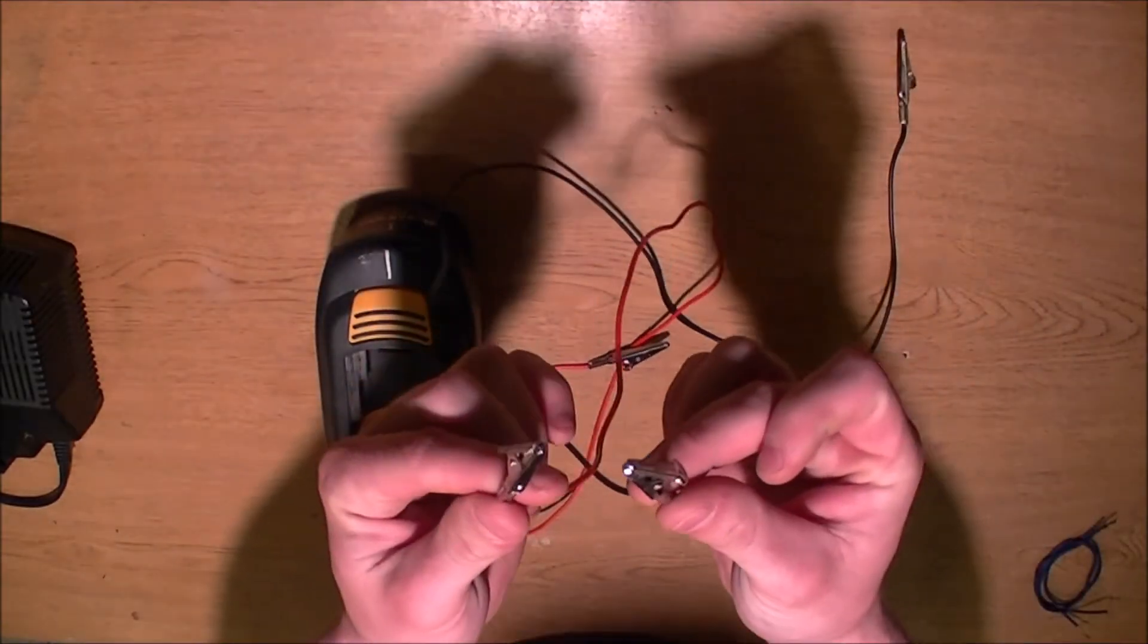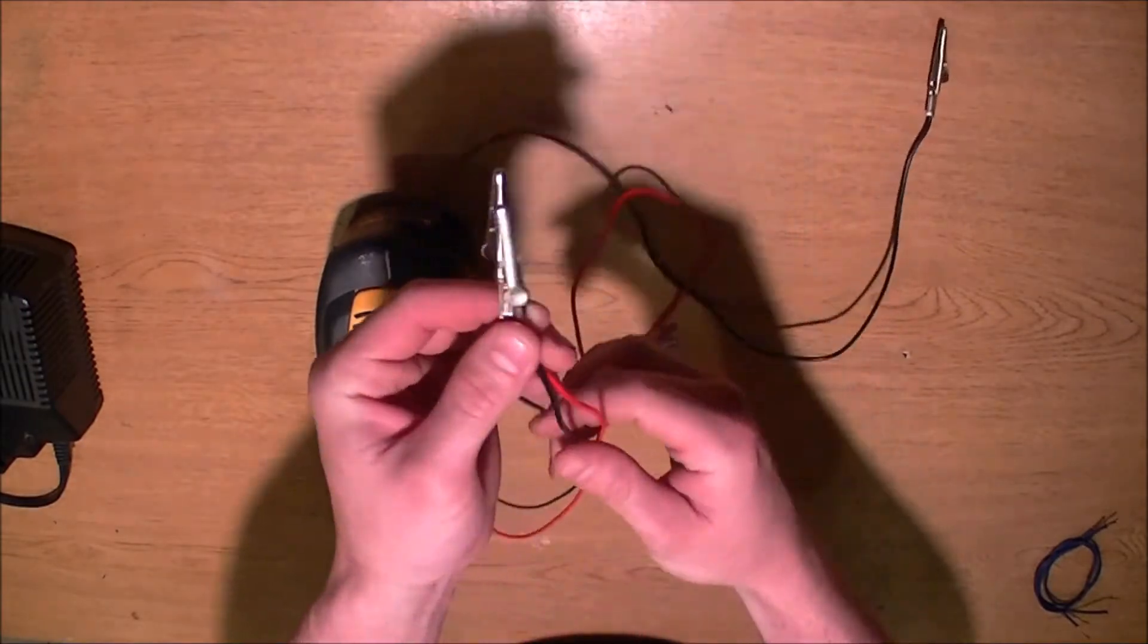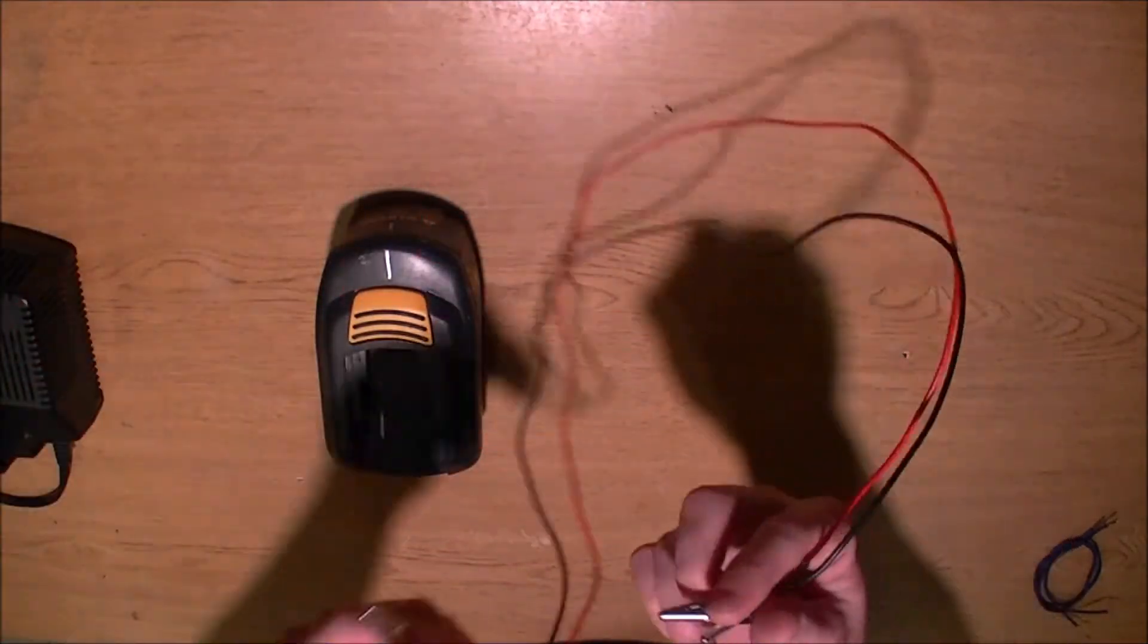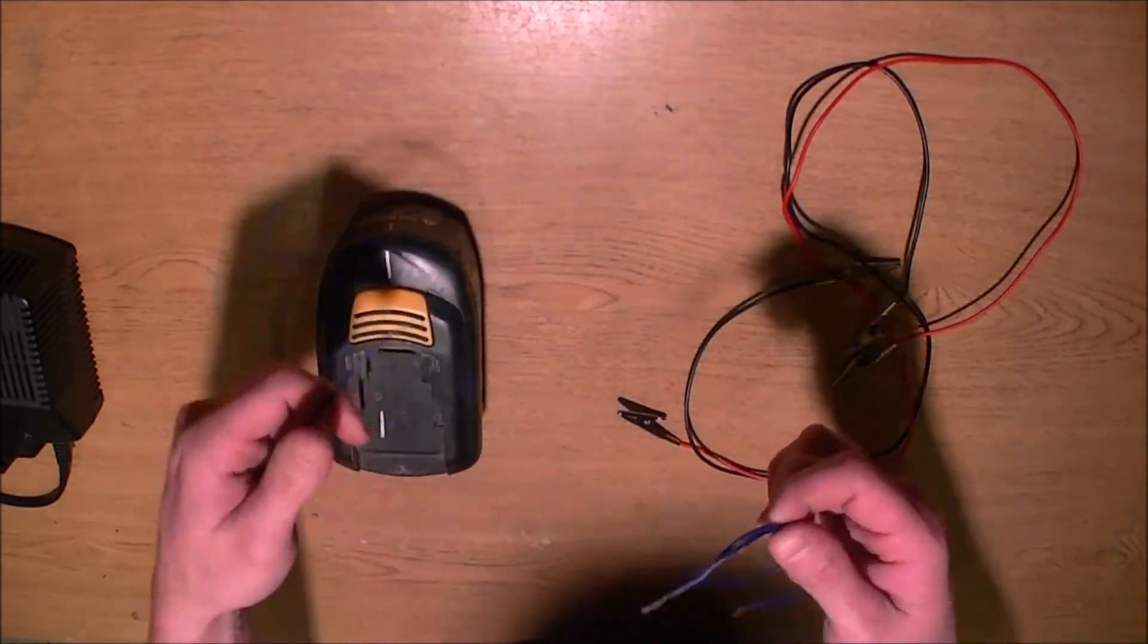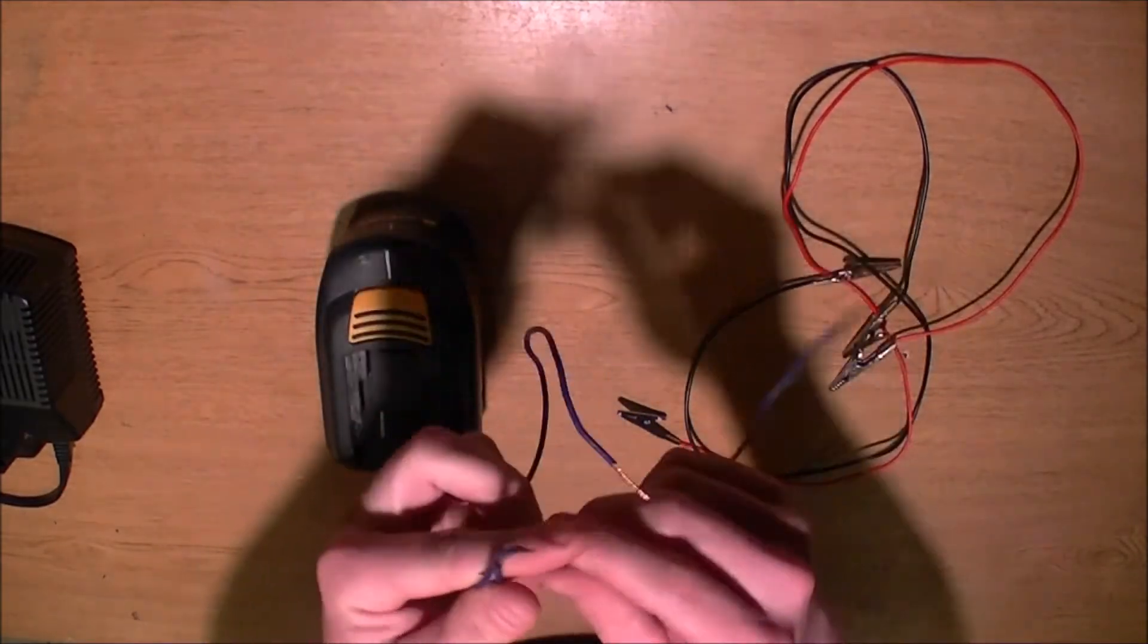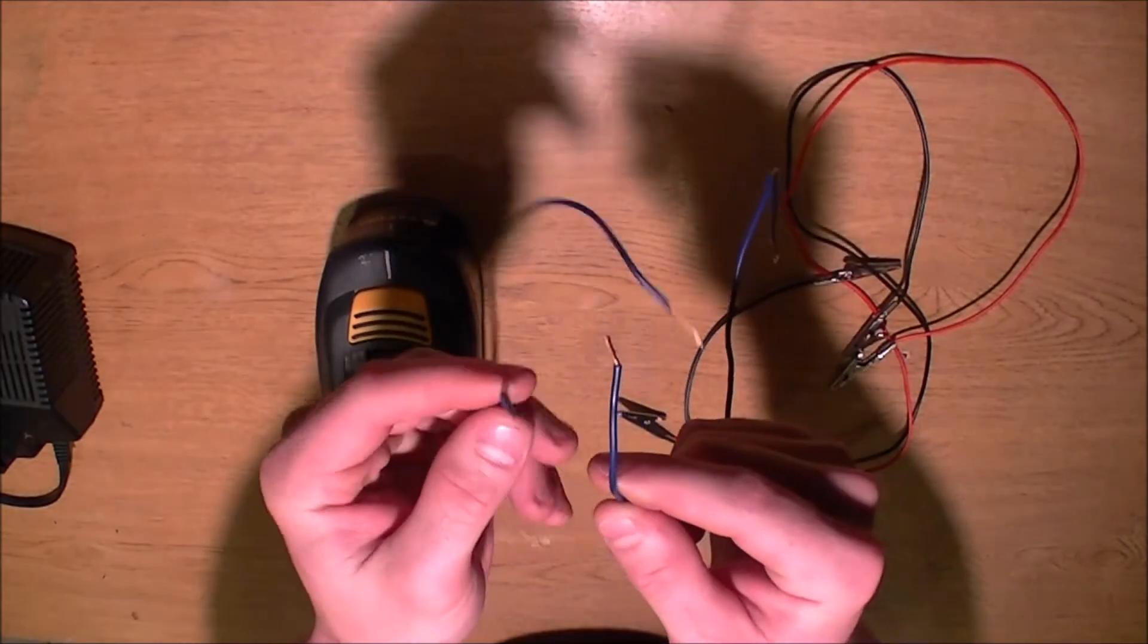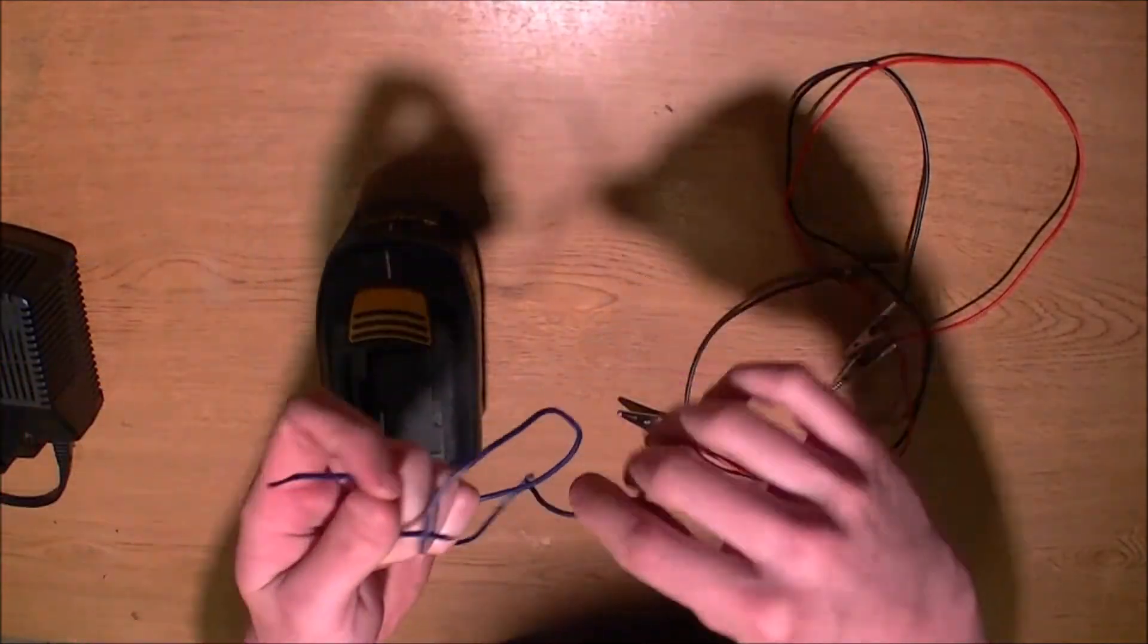You can get them at Walmart for $2.50. Negative and positive clip and two pieces of wire and fray each ends of the wire on both sides.